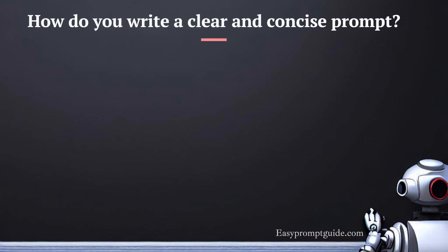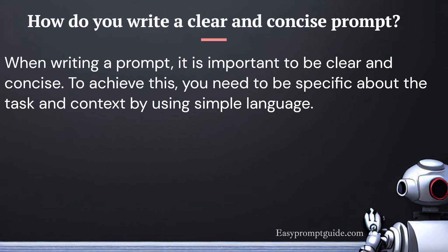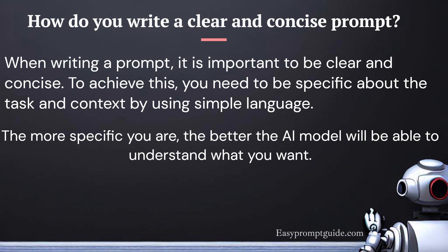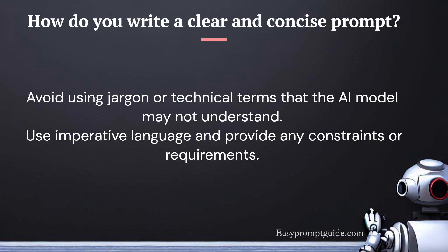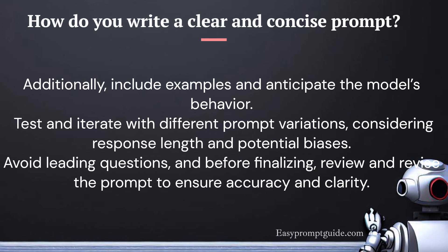How do you write a clear and concise prompt? When writing a prompt, it is important to be clear and concise. Be specific about the task and context by using simple language — the more specific you are, the better the AI model will understand what you want. For example, instead of asking 'write a poem,' you could ask 'write a haiku about a cat.' Avoid jargon or technical terms the model may not understand. Use imperative language and provide constraints or requirements. Include examples and anticipate the model's behavior. Test and iterate with different prompt variations, considering response length and potential biases. Avoid leading questions, and review and revise the prompt to ensure accuracy and clarity.